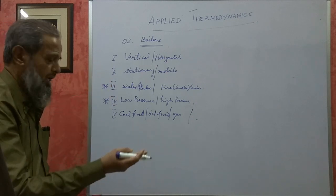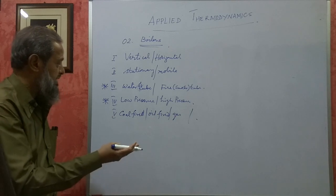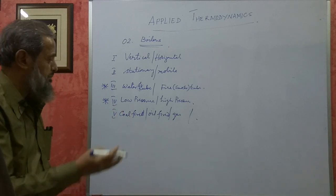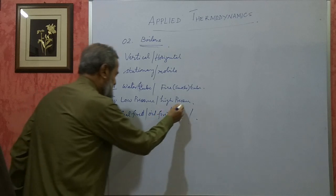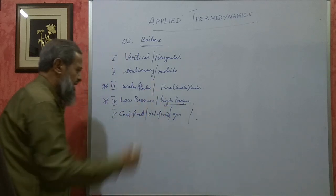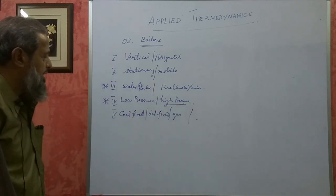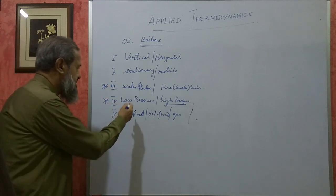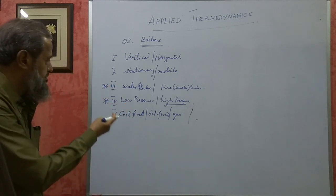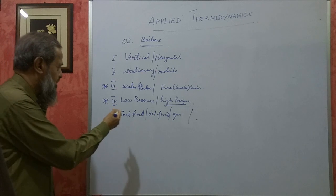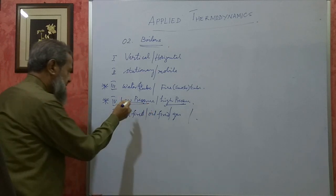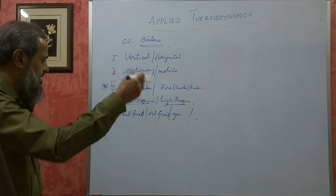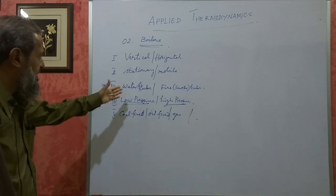There are boilers like Cochrane boiler, Lamont boiler, Benson boiler, etc. The Lamont boiler and Benson boiler are high-pressure boilers used in power generation, that is, in thermal power stations. Whereas Cochrane boiler, Babcock and Wilcox boiler, etc. are low-pressure boilers used in textile industry, sugar industry, dairies, etc.